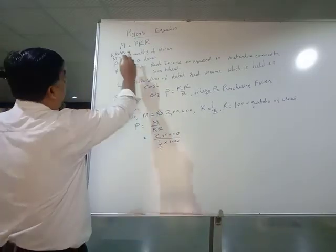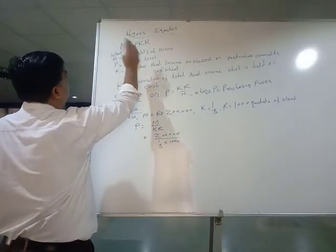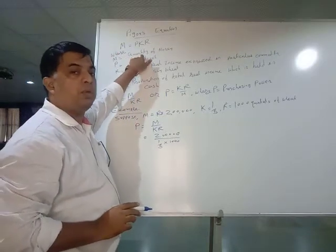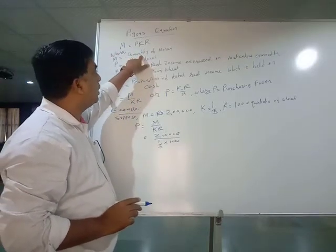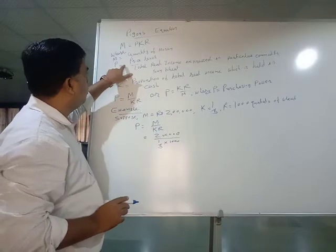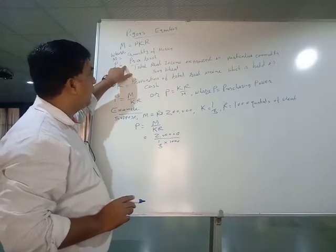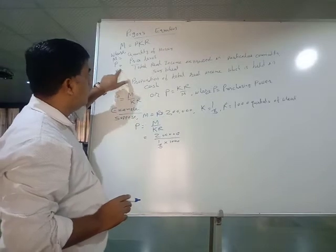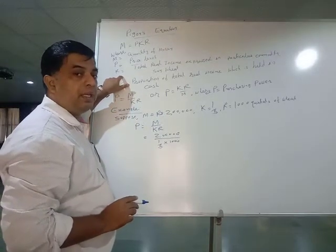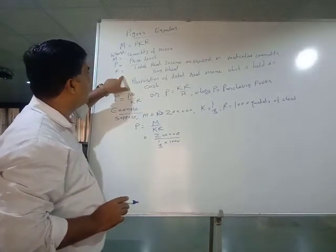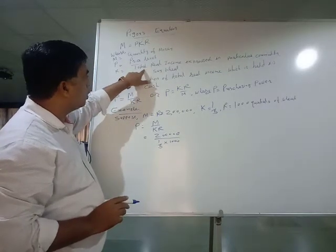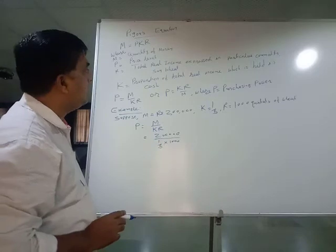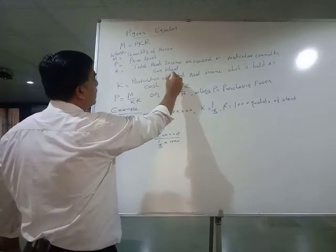Pigou's equation is: M is equal to PKR, where M stands for the total quantity of money or supply of money, P stands for the general price level, and R generally stands for income. Here we use R because it represents total real income expressed in terms of a particular commodity.